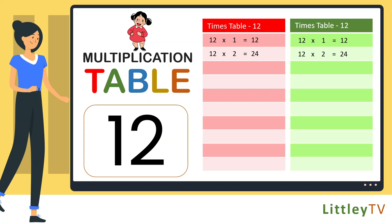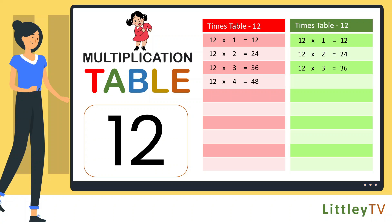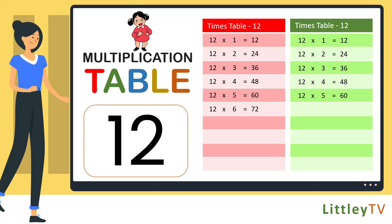Table of 12. 12 twos are 24, 12 threes are 36, 12 fours are 48, 12 fives are 60, 12 sixes are 72.